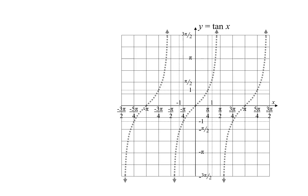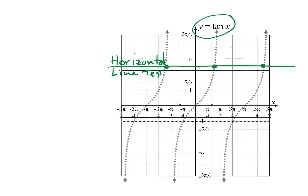To understand this, we look carefully at the inverse tangent function. In a previous video, we learned a process for finding an inverse function. First, we need the original function to pass the horizontal line test, so that it is one-to-one. This means any horizontal line we draw should cross the function in at most one place. This horizontal line crosses the tangent function in three places just on this graph, and this graph does not even show all of the tangent function. The tangent function clearly does not pass the horizontal line test, which means it is not one-to-one. To solve this problem, we restrict the domain.